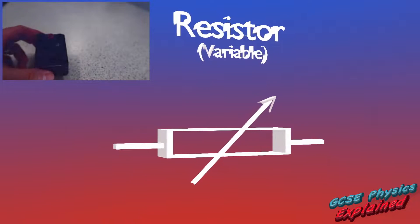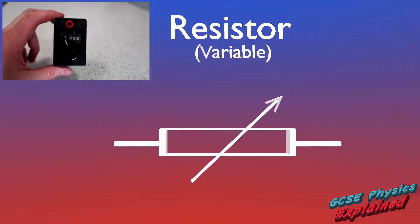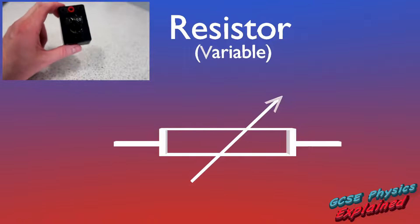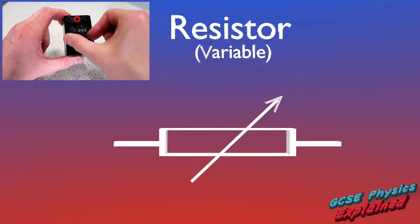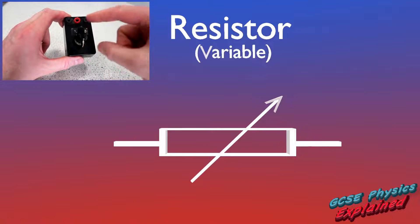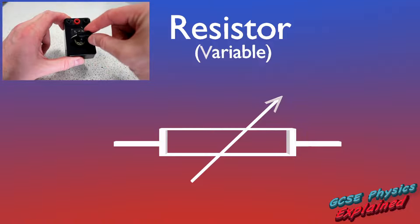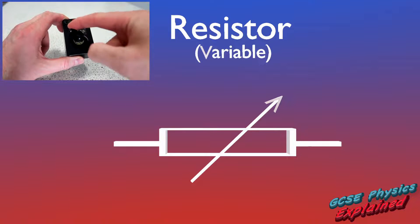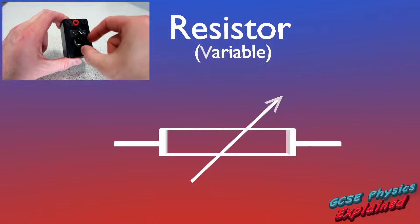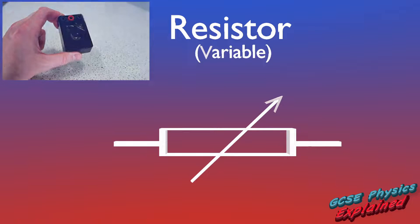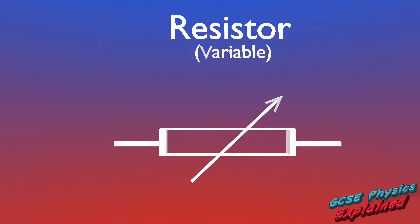Variable resistors: you can change the size of the resistance, so you can make the electrical current bigger or smaller. To draw the symbol, just draw a rectangle like a fixed resistor but then put an arrow through it at an angle — a bit like a lever you could pull, with an upside-down V on the end. V for variable.